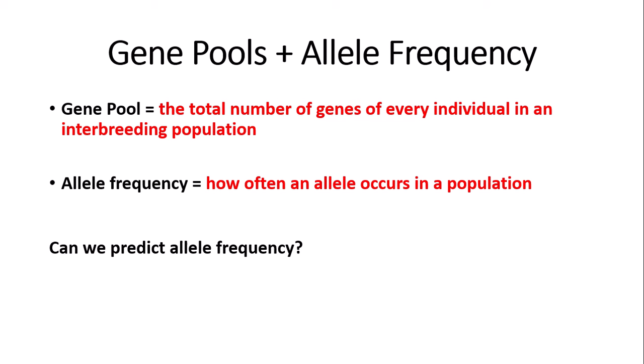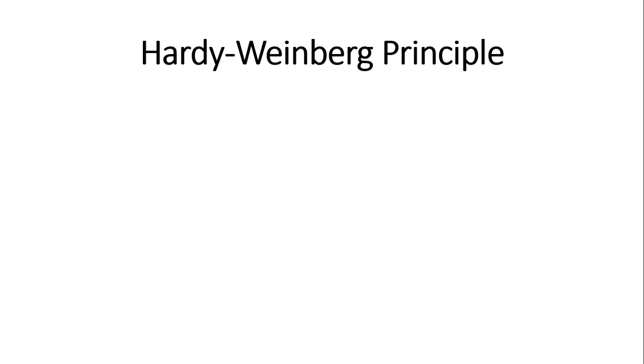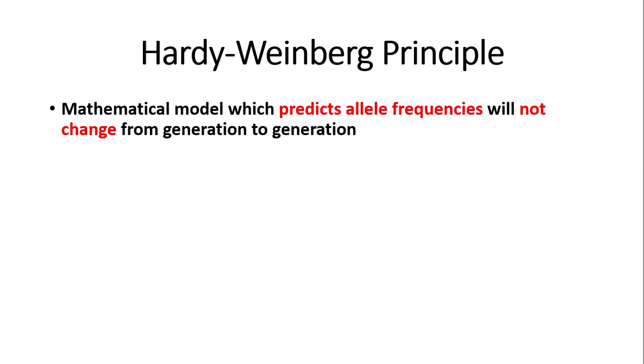The question remains: how can we predict allele frequency? The Hardy-Weinberg principle can predict allele frequencies. It is a mathematical model which predicts allele frequencies that will not change from generation to generation. As you can probably tell, the Hardy-Weinberg principle is based on many assumptions.